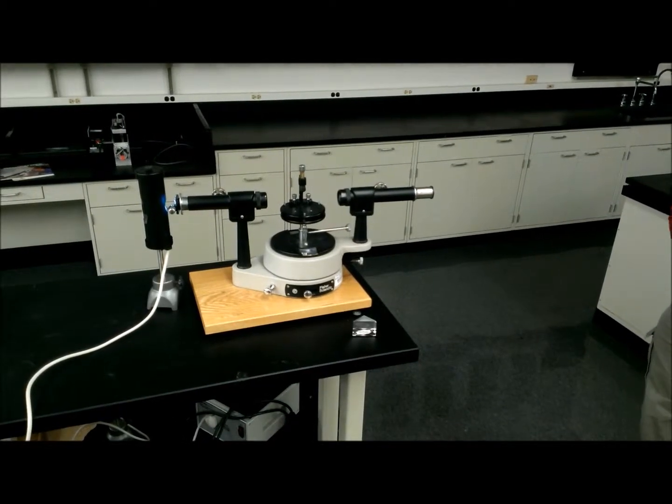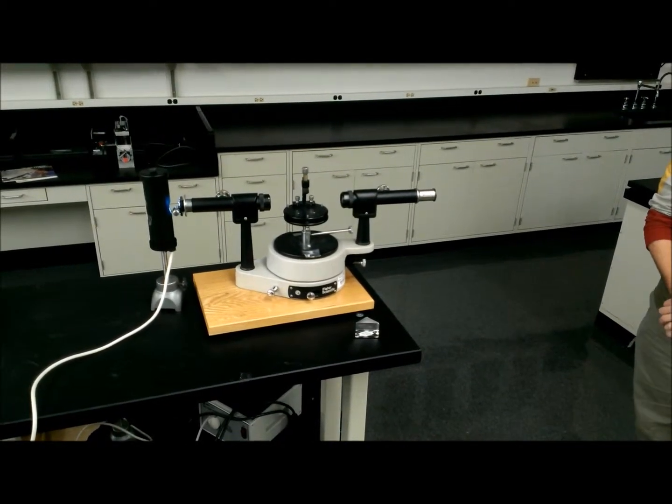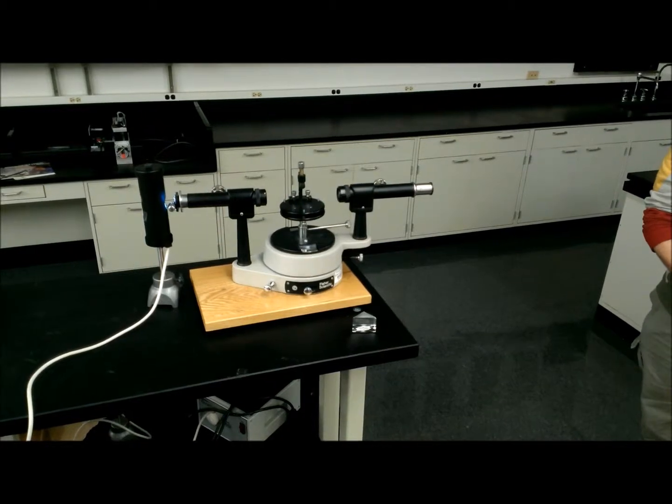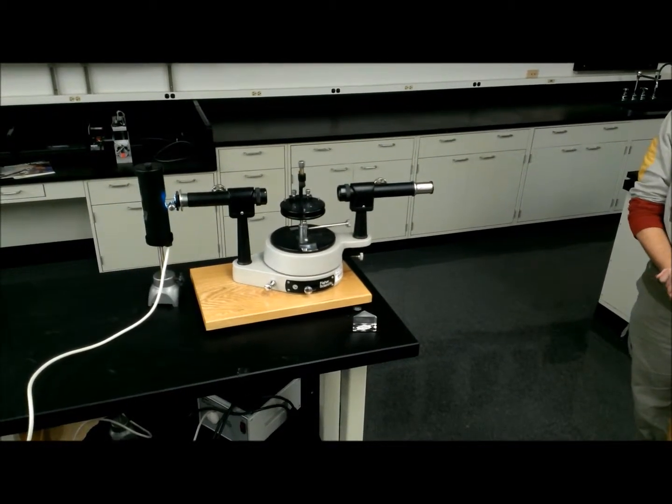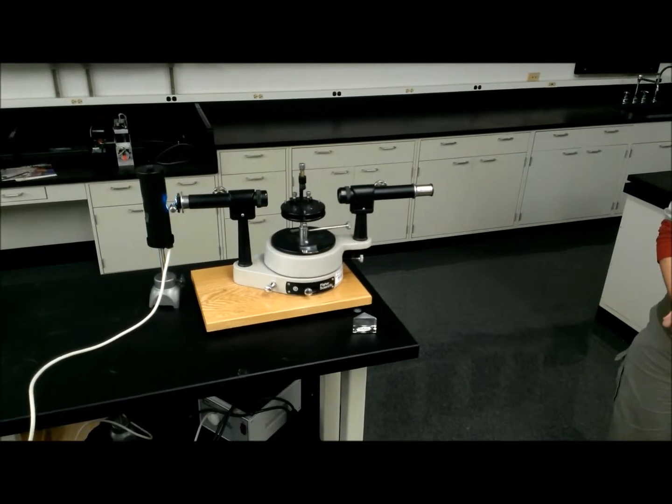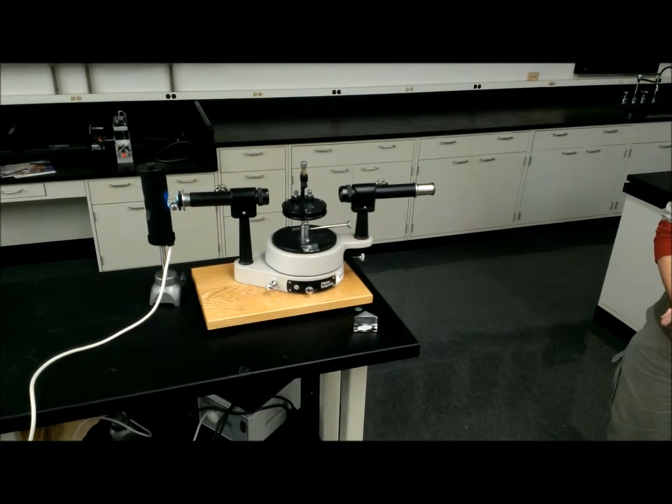Number one is titled Index of Refraction of a Glass Prism and Dispersion. The objective is to measure the index of refraction of a triangular prism by the minimum deflection method. By doing this at several wavelengths, the index of refraction of the prism can be measured.